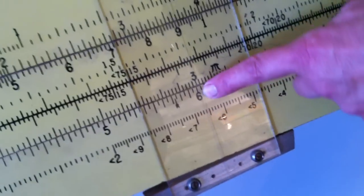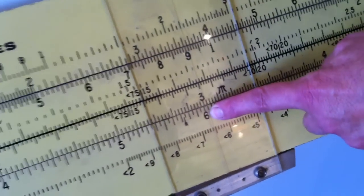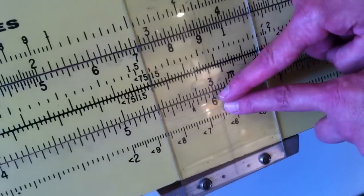If I now look back onto the original scale I can see the answer is 6. So 2 times 3 is 6.